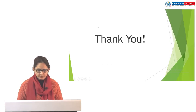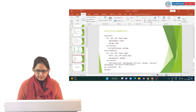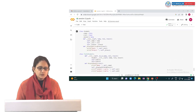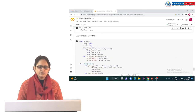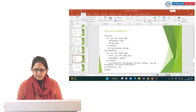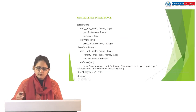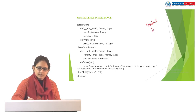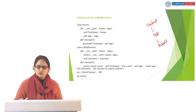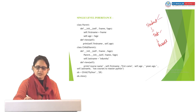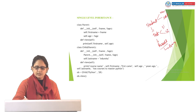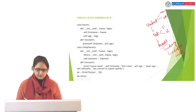We have one more program for multi-level inheritance. In multi-level inheritance we have a student class, a test class, and a result class. The test class inherits the student class. We display student name and role number in the student class, the marks of two subjects in the test class, and in the result class we calculate the average and display the entire information.